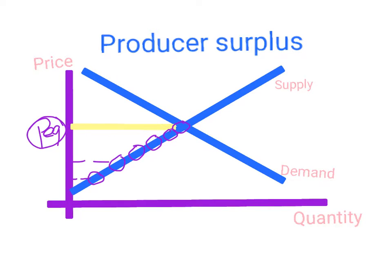So what we can conclude is that mathematically, the area inside this triangle here is the actual total producer surplus of all companies that are selling the product.